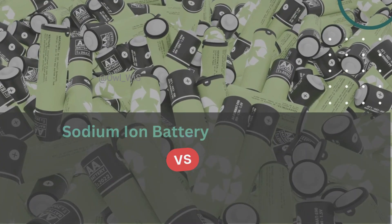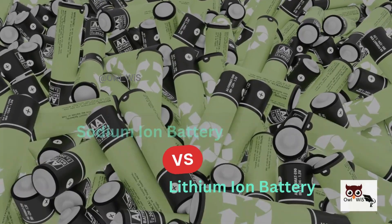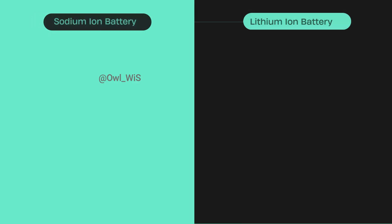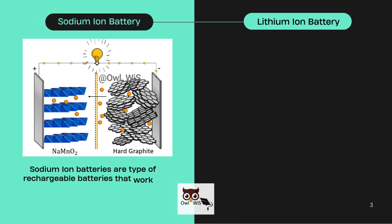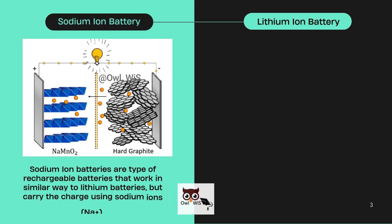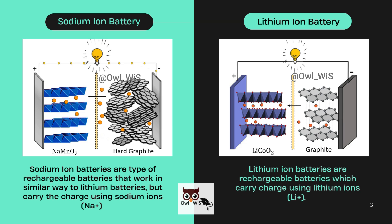Let us see differences between sodium ion and lithium ion battery. Sodium ion batteries are a type of rechargeable batteries that work in a similar way to lithium batteries but carry the charge using sodium ions. Lithium ion batteries are rechargeable batteries which carry charge using lithium ions.